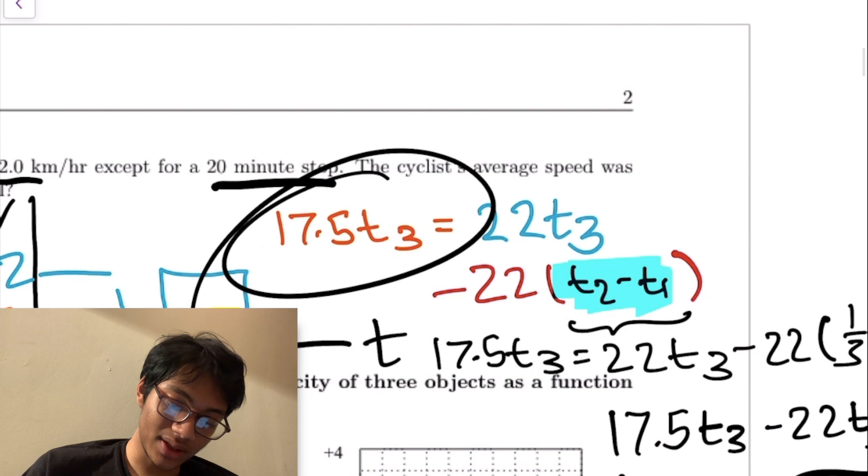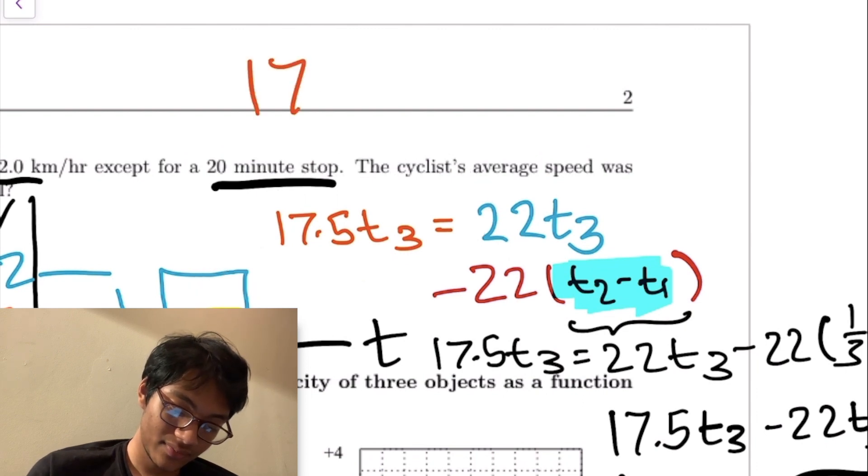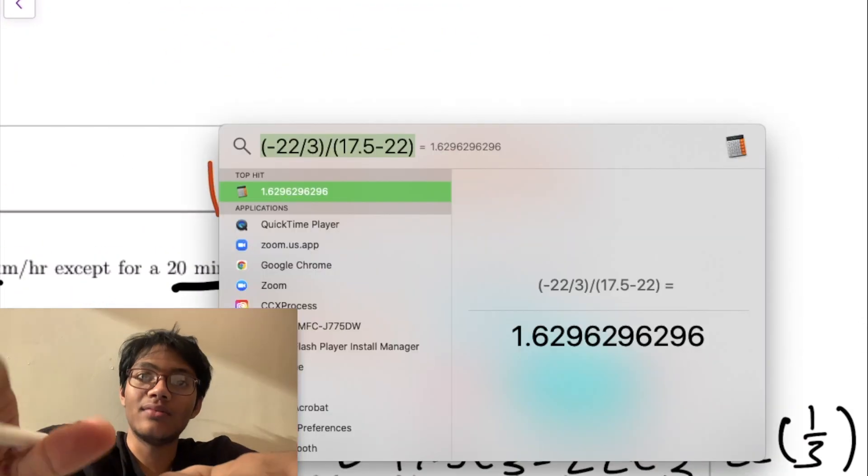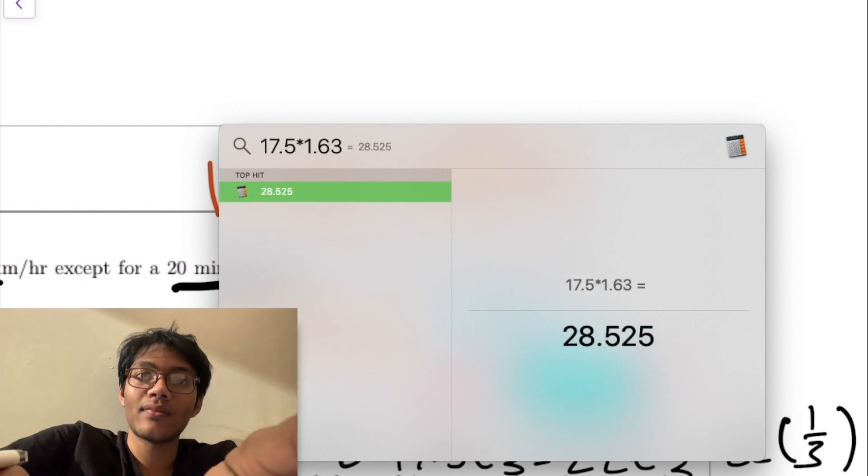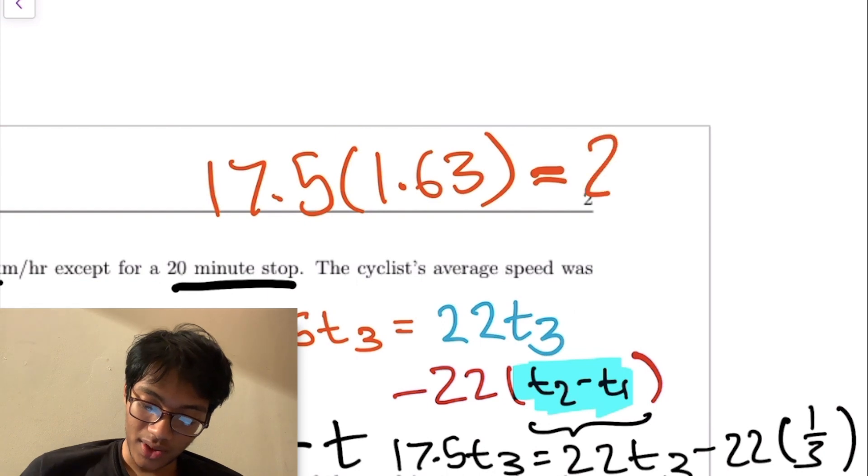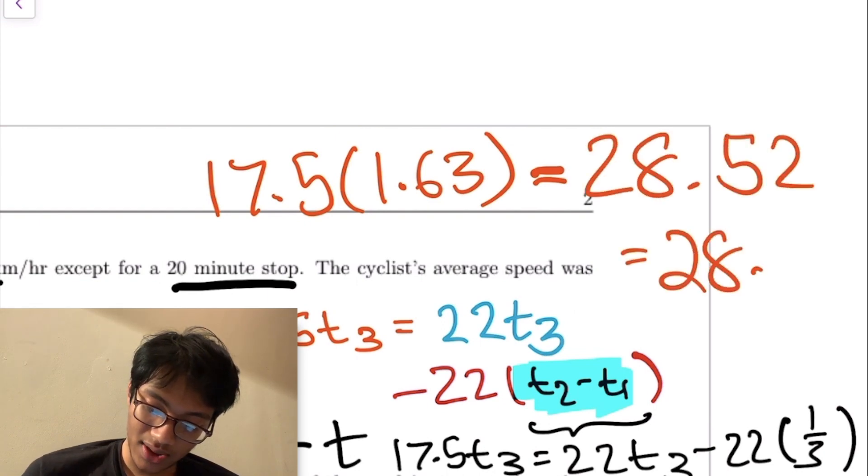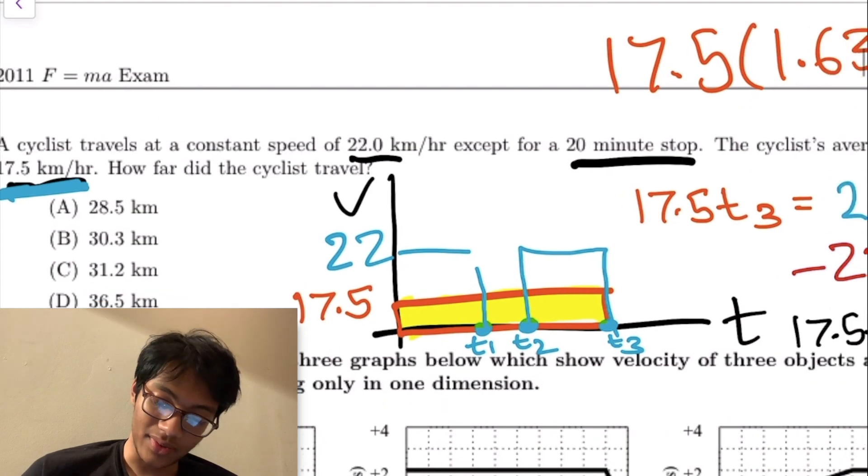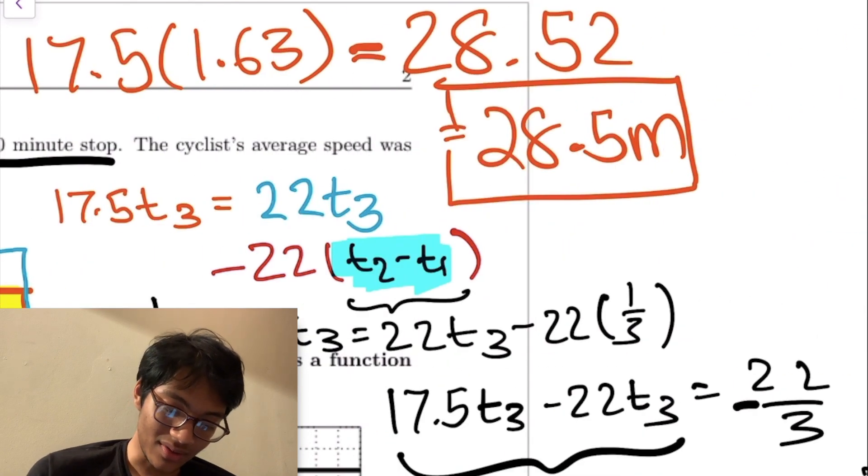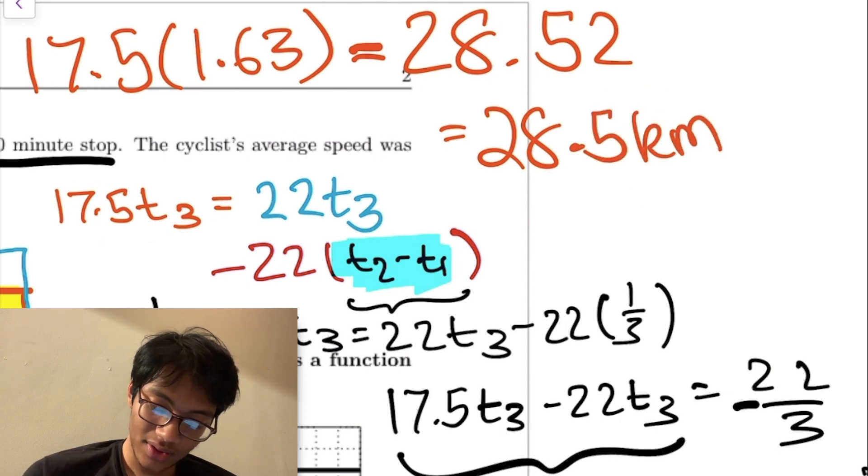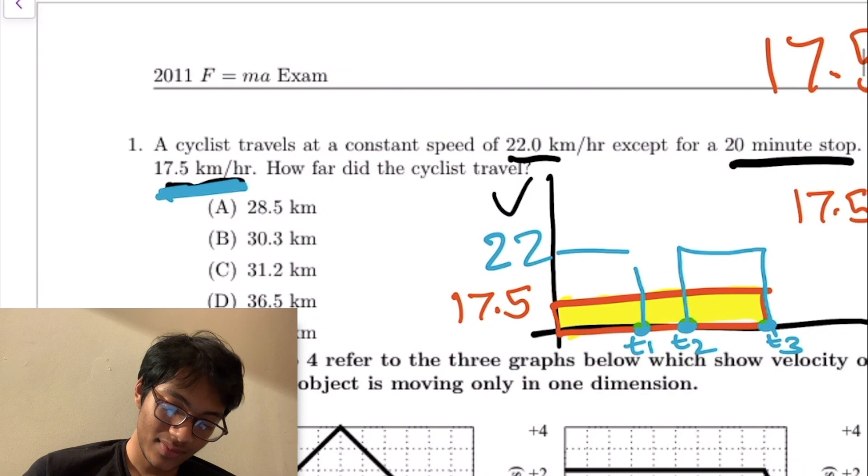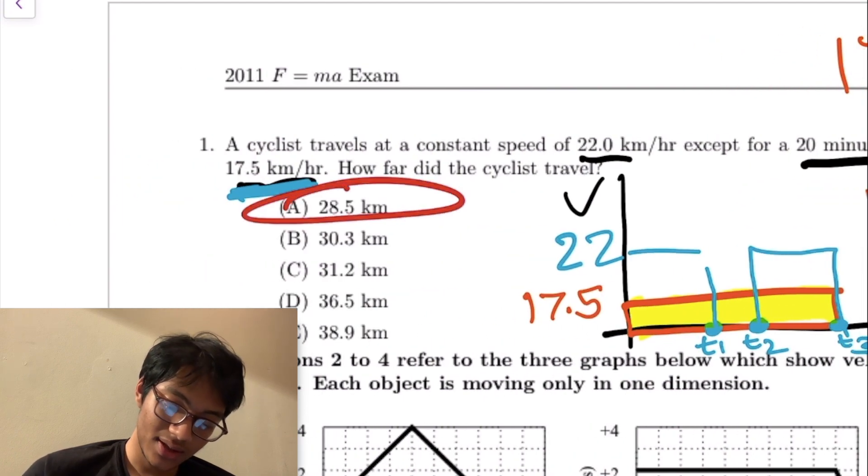1.629 seconds, which is about 1.63. If we want to find the total distance he travels, we just take that time and plug it in. 17.5 times t3, which we just found is 1.63. Let's calculate that: 17.5 times 1.63 equals 28.52, which we can round to about 28.5 kilometers. That, ladies and gentlemen, is how you solve the first question of the F equals MA 2011 exam. My final answer is choice A, 28.5 kilometers.